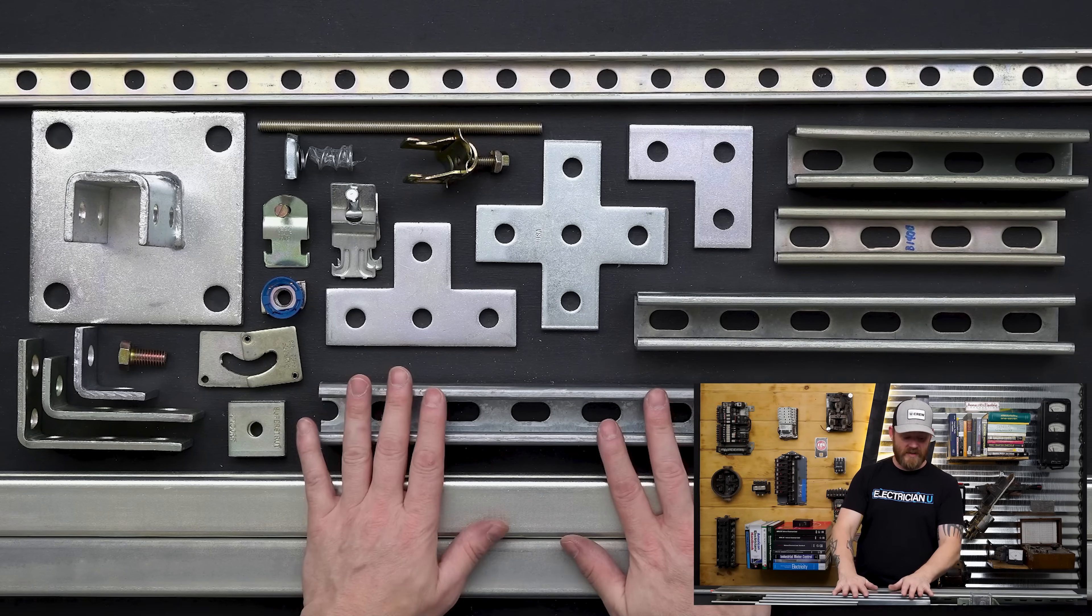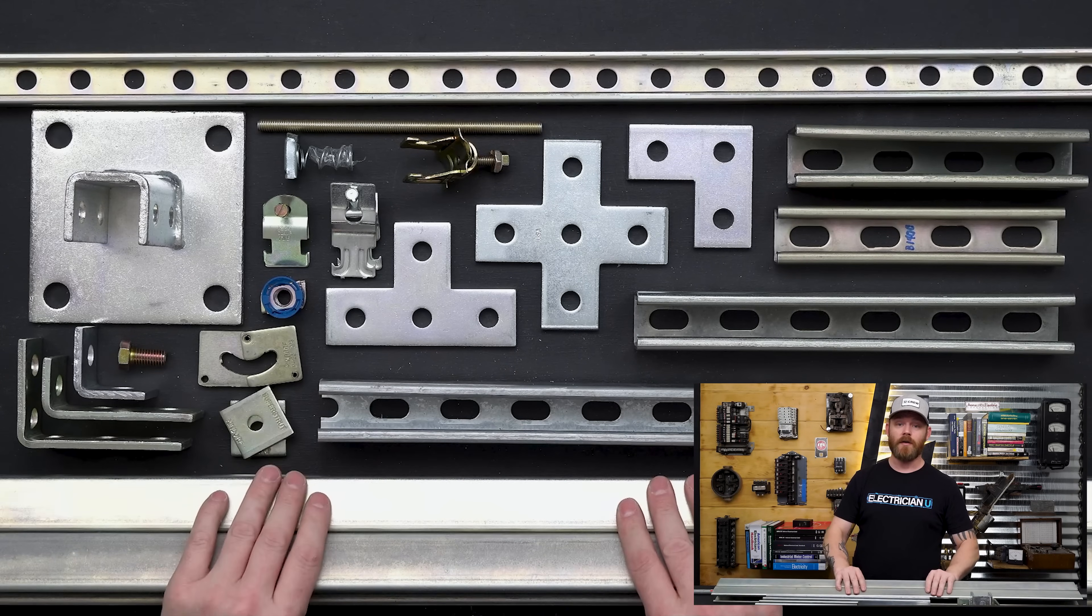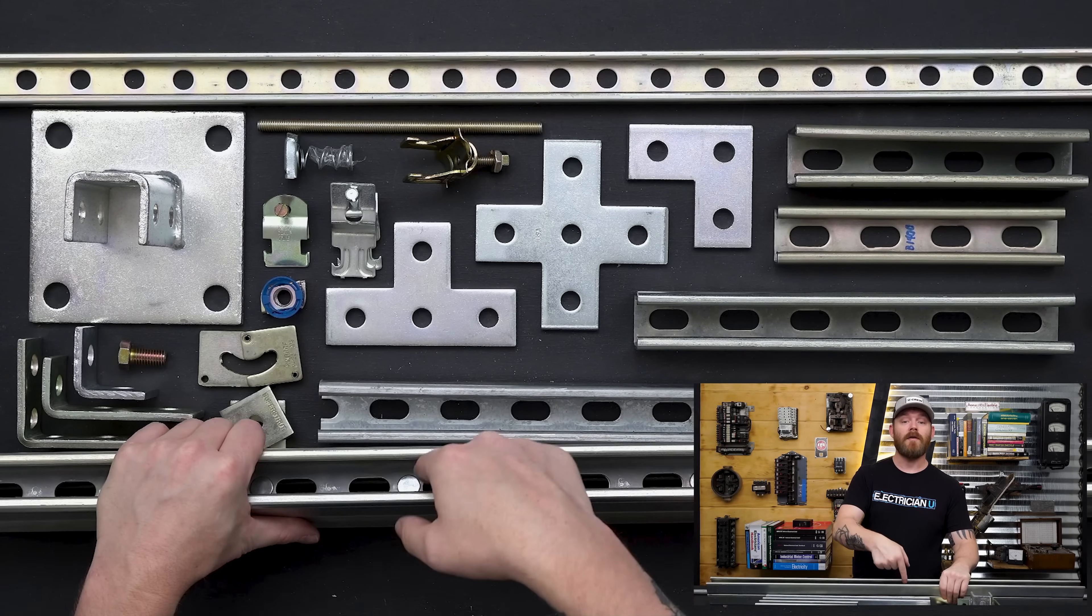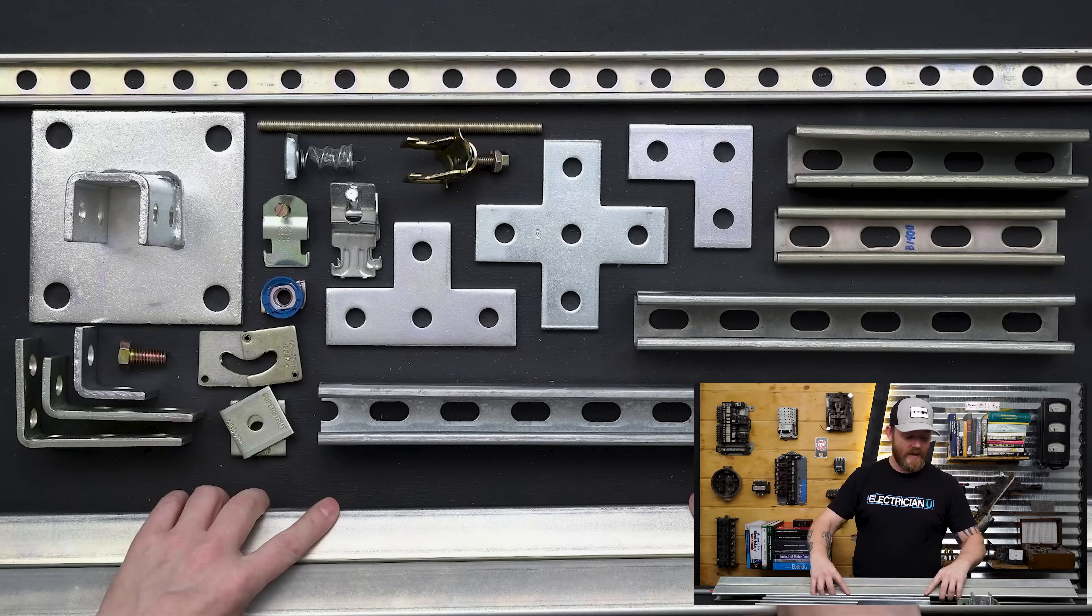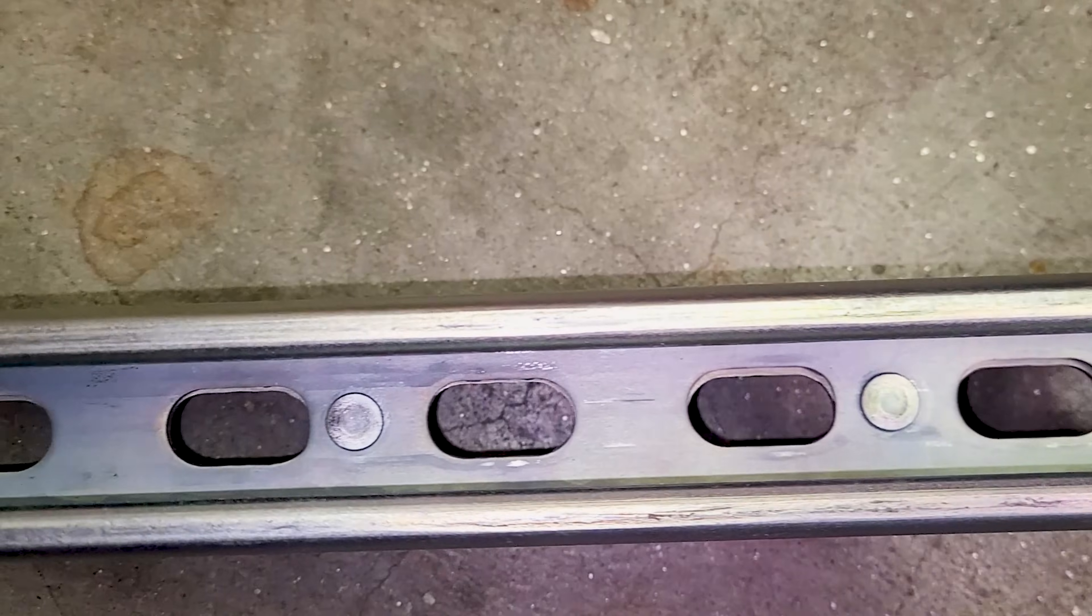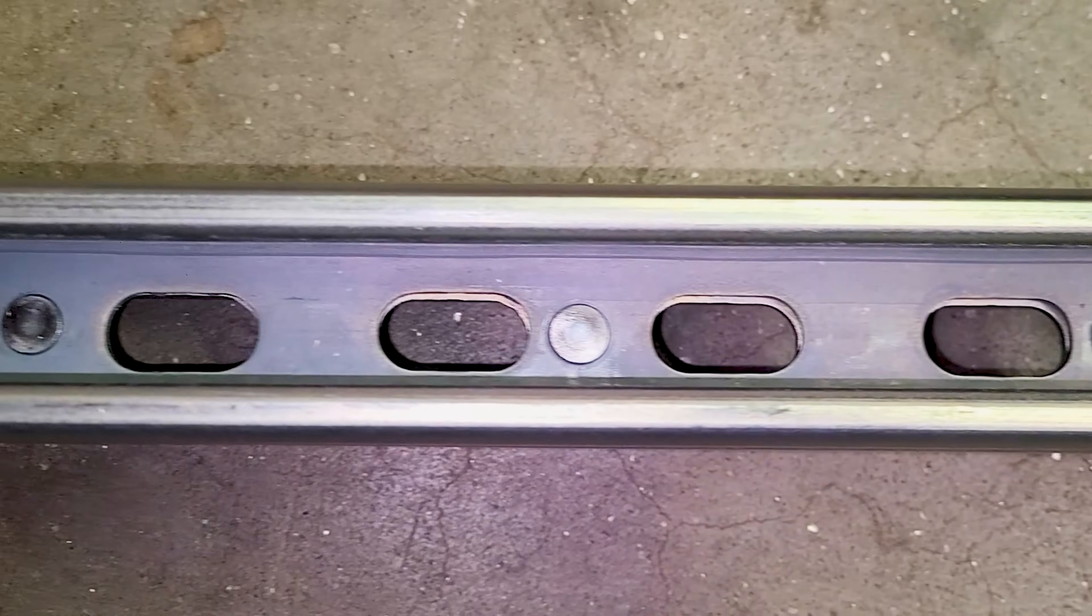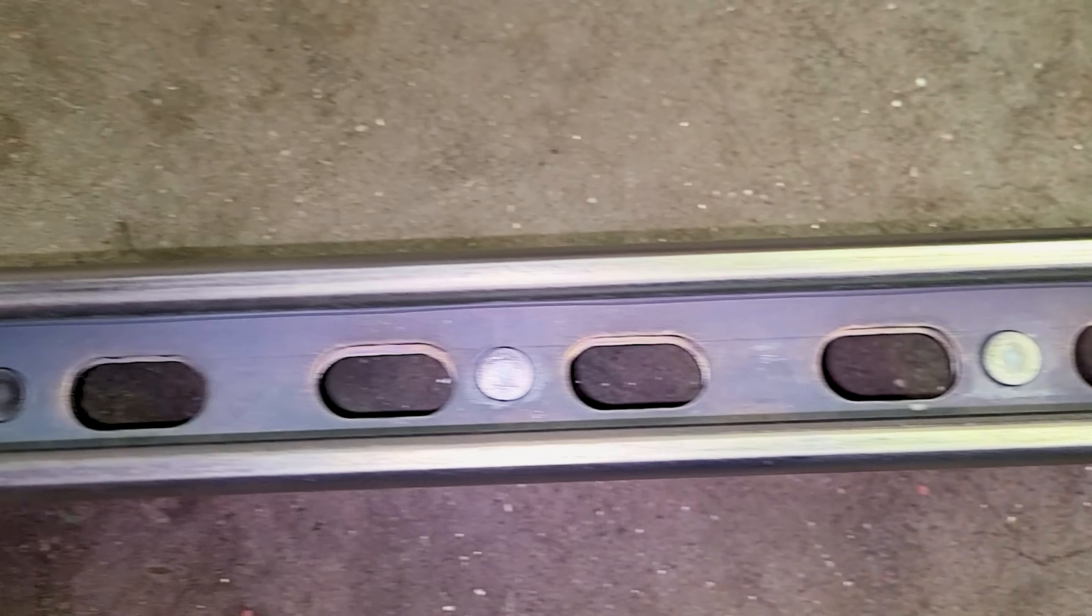The next thing you might notice is right here, I've got this back to back. So with ABB's specifically, they rivet theirs together. So you'll see all these rivets down that whole entire line.